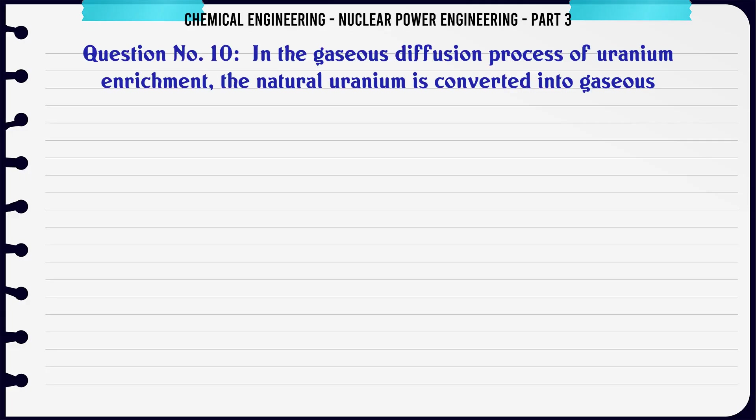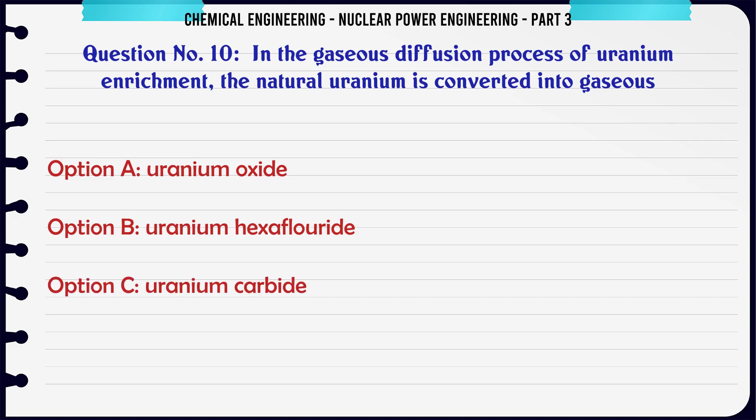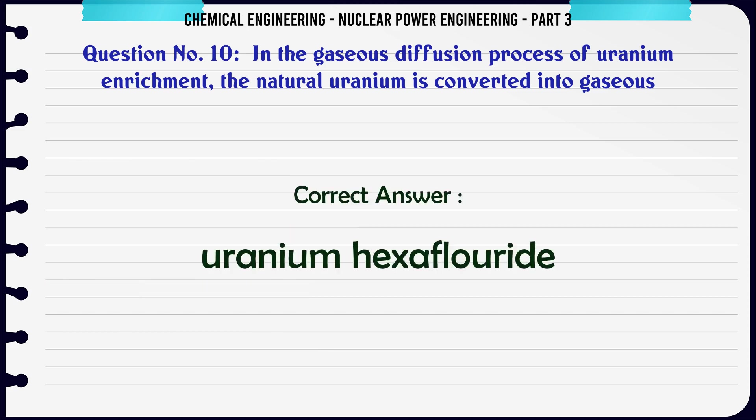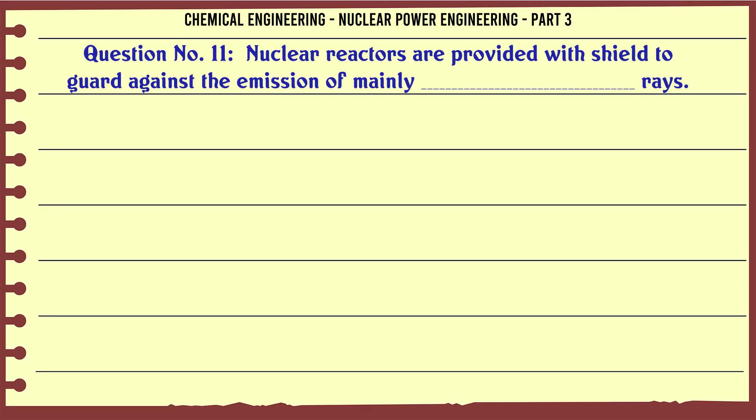In the gaseous diffusion process of uranium enrichment, the natural uranium is converted into gaseous uranium hexafluoride. The correct answer is uranium hexafluoride.